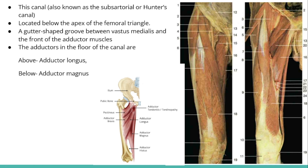This canal is located below the apex of the femoral triangle and extends up to the adductor hiatus. It is actually a gutter-shaped groove between the vastus medialis muscle and the adductor muscles of the thigh. From above it has adductor longus, and below it has adductor magnus. These two adductors make the floor of this adductor canal.